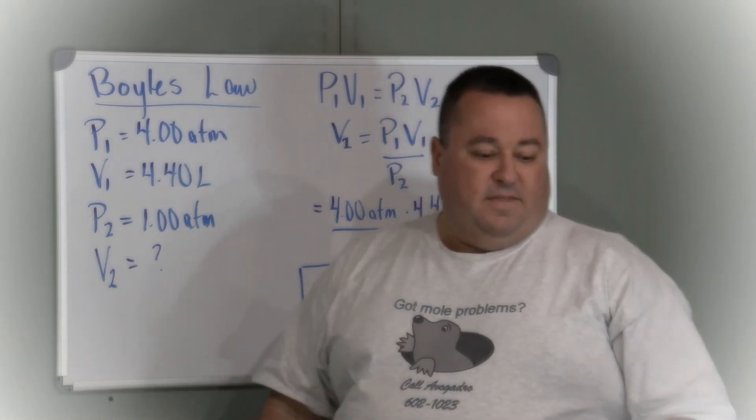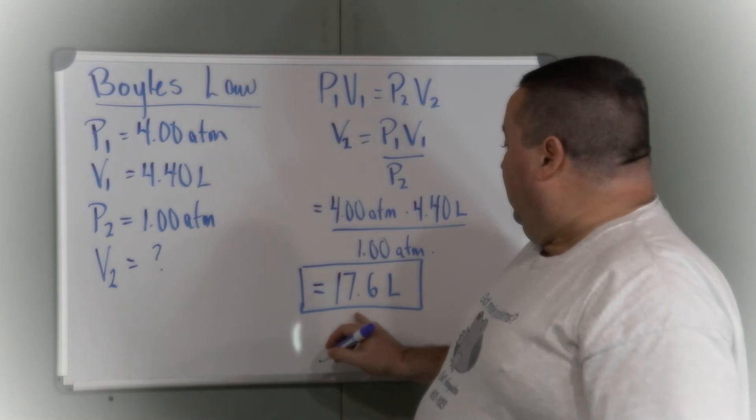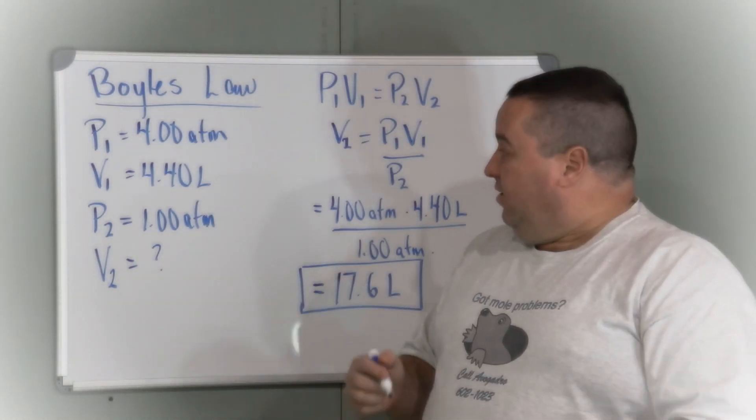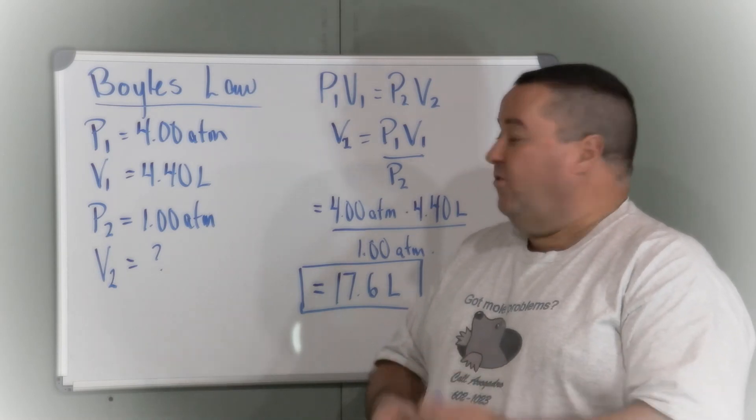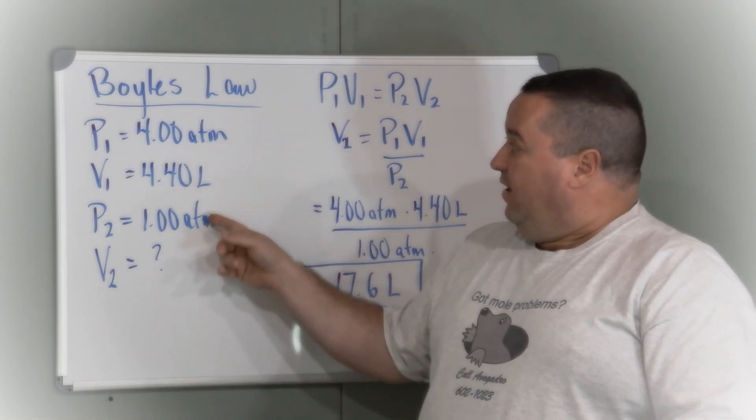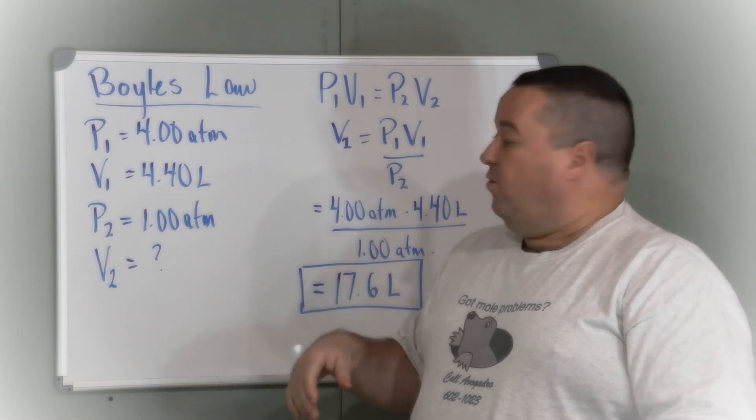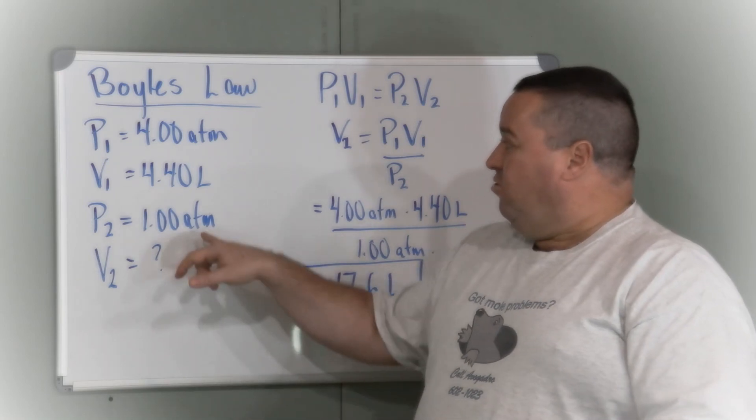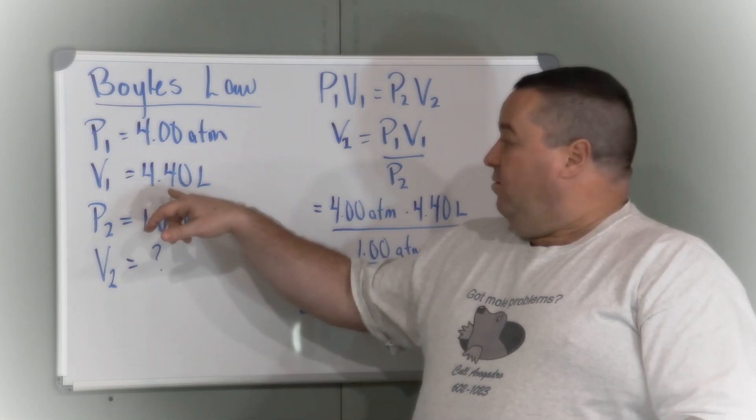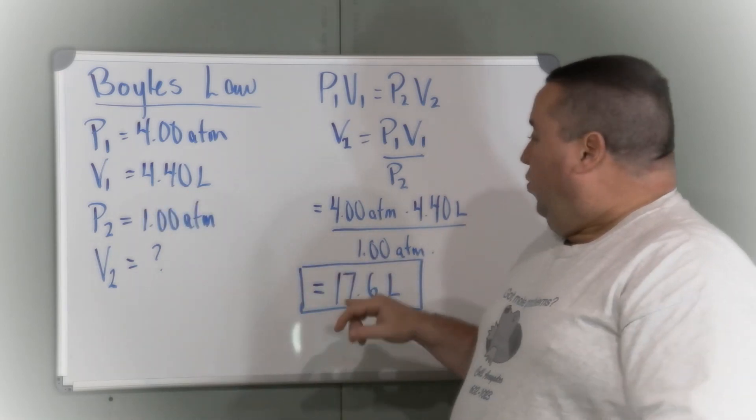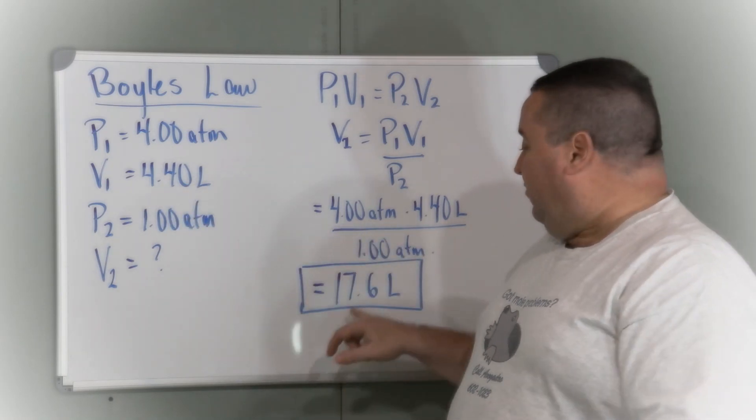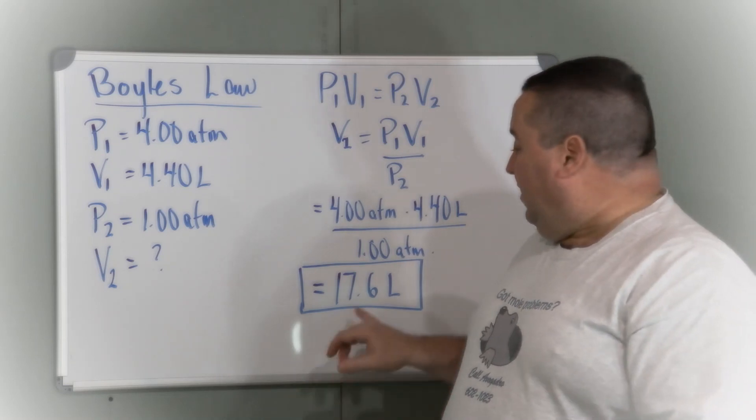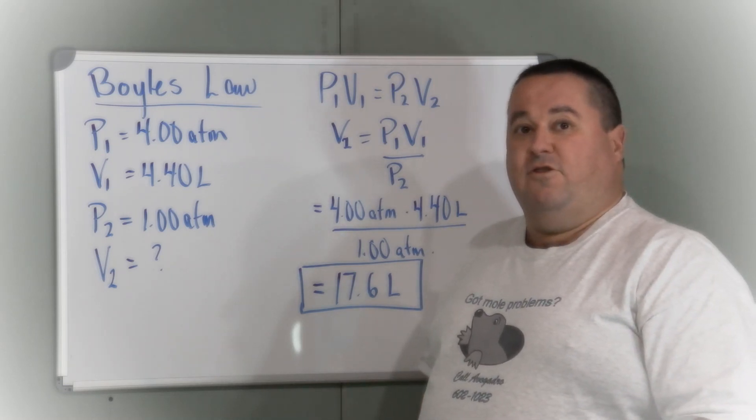So the final volume that that amount of air would occupy, 17.6 liters, shows you why this is such an important concept for scuba divers to understand. If they were to hold their breath at the depth in the question and ascend to the surface, because of the change in pressure, that volume of air would actually increase from 4.40 liters to 17.6, which results in something that scuba divers call a lung overexpansion injury.